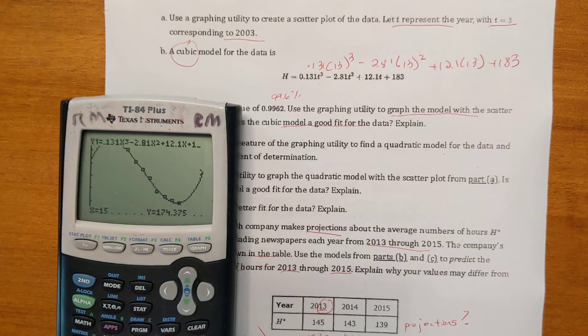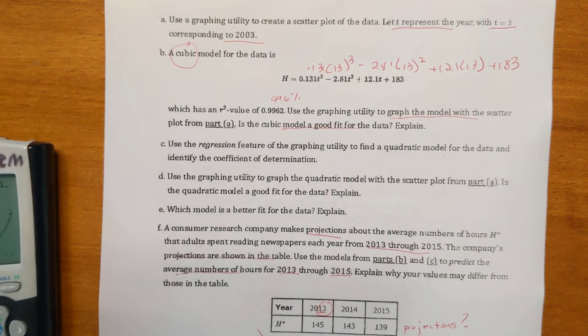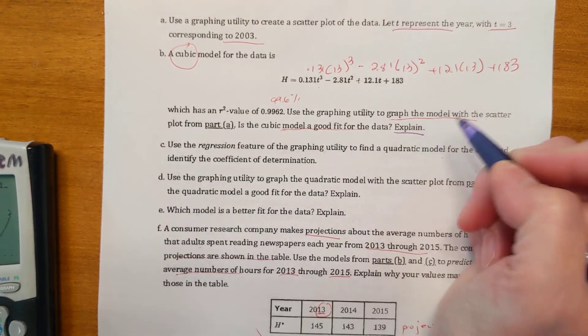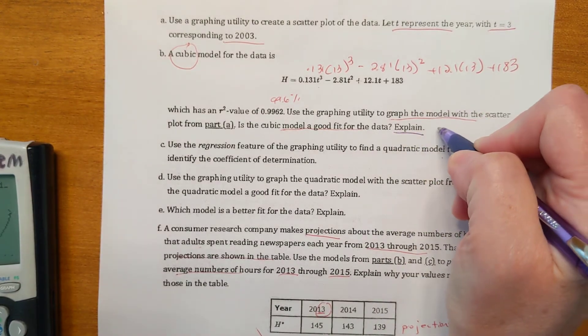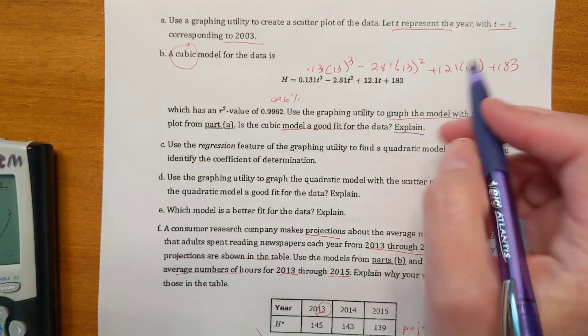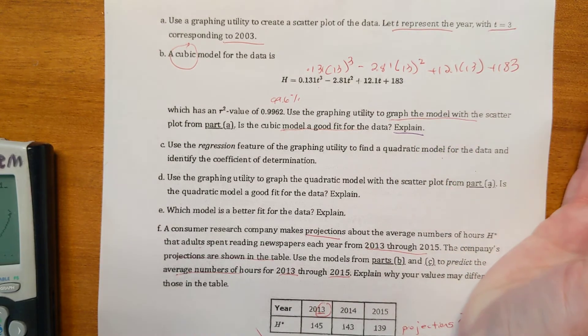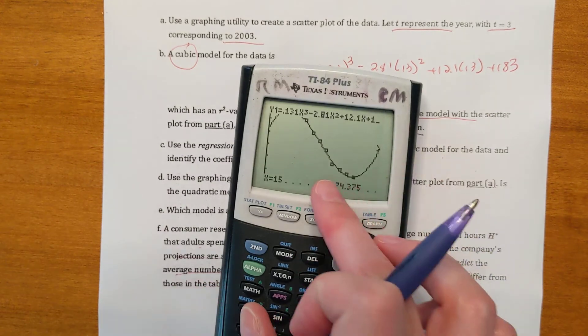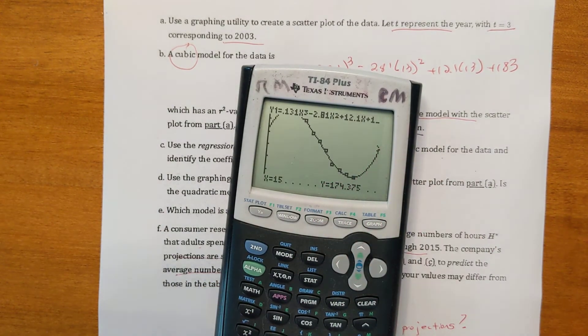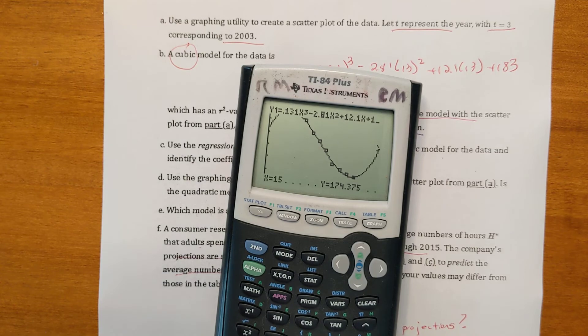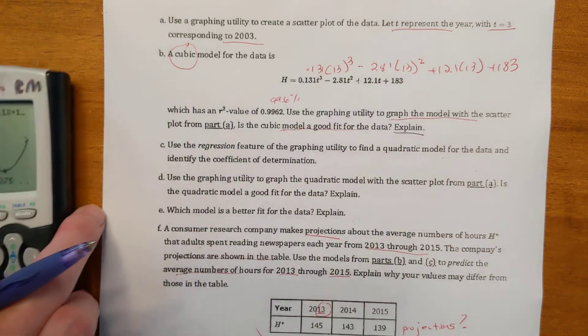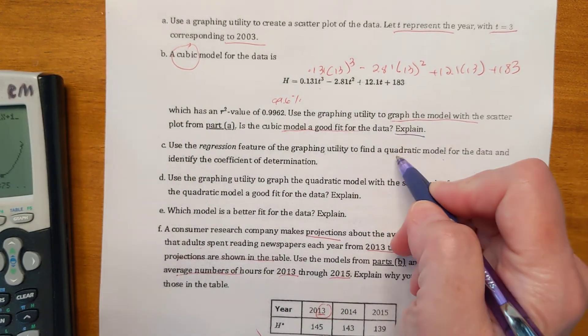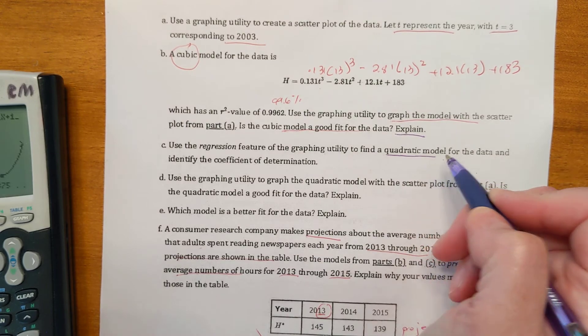They want to know is it a good model? Well, it's a good model for within the data. But like I said, it looks like it's not going to be a good model in the long run because it's going upward for no good reason. The numbers aren't going up. So why would they just randomly jump up all of a sudden? Something's not working out well there. We want to do it again and this time find the quadratic model.